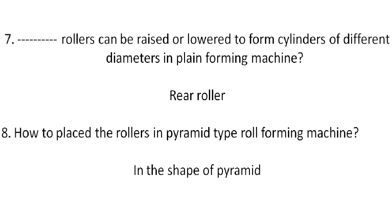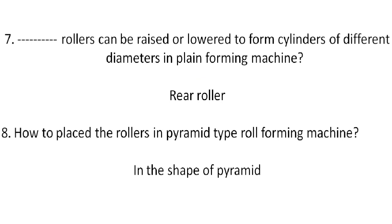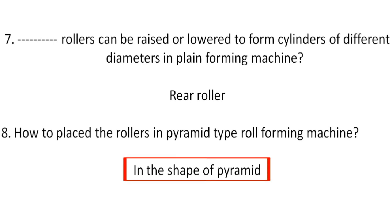In the pyramid type roll forming machine, the rollers are set in the shape of a pyramid. In plain forming machines, the rear rollers can be raised or lowered to produce cylinders of different diameters. How are the rollers placed in a pyramid type roll forming machine? The rollers are set in the shape of a pyramid.